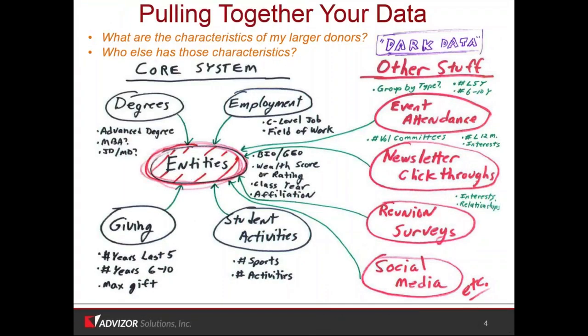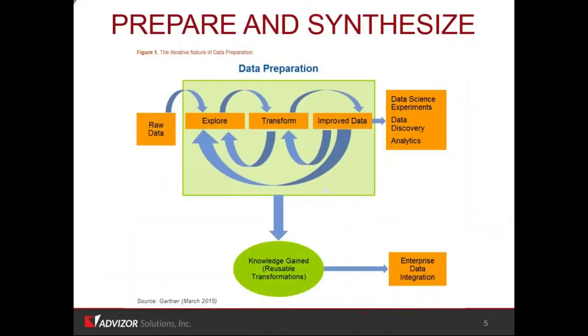When you pull it together, we can create, blend, and synthesize this. And in the entity table, we have facts about all these aspects of a prospect — who they are, how they've engaged, how much they've engaged, what their capacity is. That's the whole set of things we look at when we're looking at finding prospects.